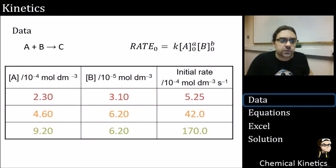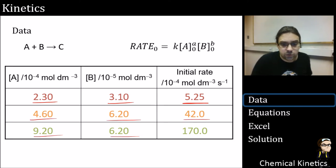So this is our data. We make one run where we have 2.3 and 3.1 as our relative concentrations, and we get the initial rate as 5.25. And then a second run with this data, and a third run. Now the important thing to note here is that we have two runs where our concentration of b has been kept the same. This now means these are directly comparable with each other.